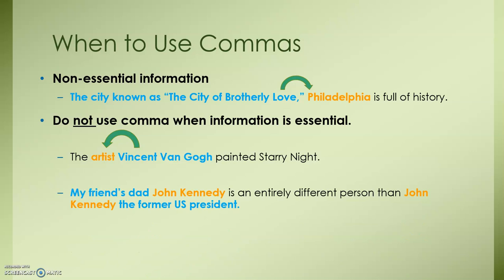Here's how it gets even trickier. Let's look at another reason why you would not separate an appositive with commas. Here we have an appositive phrase: 'My friend's dad, John Kennedy, is an entirely different person than John Kennedy, the former U.S. president.' If we were to separate each phrase with a comma, then we would simply have 'John Kennedy is an entirely different person than John Kennedy,' and that doesn't give us any useful information. We're differentiating the two, so we need those phrases to understand which John Kennedy we are talking about. When you use commas, remember, it's basically saying you can pluck out those phrases and the sentence is still complete — not grammatically, but in terms of making sense and having all the necessary information.